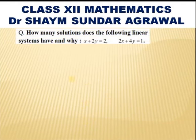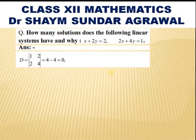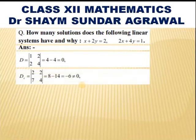So let us solve by Cramer's rule: x + 2y = 2 and 2x + 4y = 1. Here D is the determinant of the coefficients of x and y, so |1 2 / 2 4| = (1×4) − (2×2) = 4 − 4 = 0.